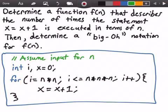Then we have our for loop. Our for loop runs from i equals n times n or n squared, and it's going to run while i is less than or equal to n times n times n or n cubed. Then i is going to increment by one each time by our statement i plus plus. Within the for loop we have our statement x equals x plus one.